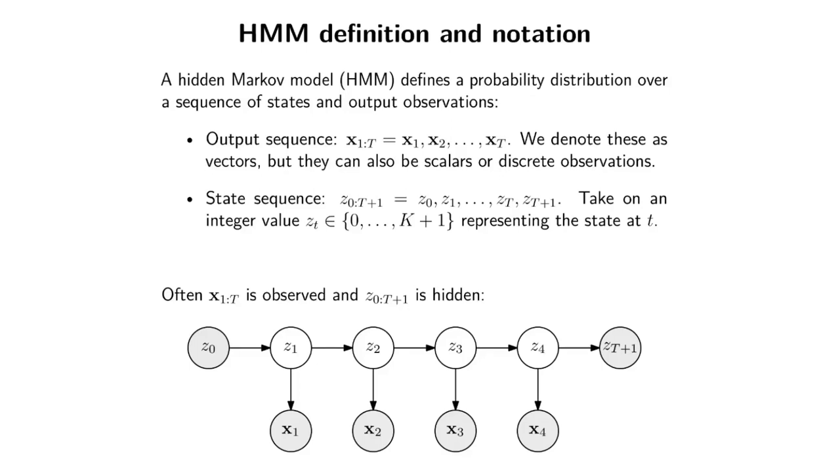Let's be a little bit more formal about this to tie it together. A hidden Markov model (HMM) defines a probability distribution over a sequence of states and output observations.